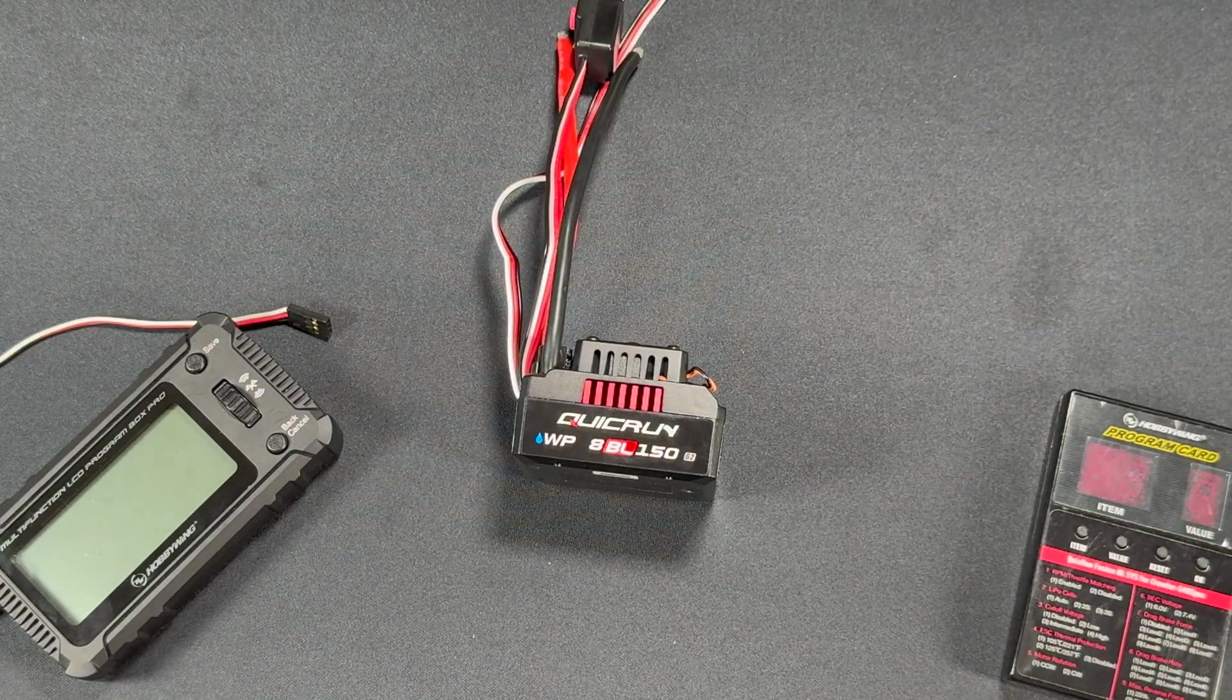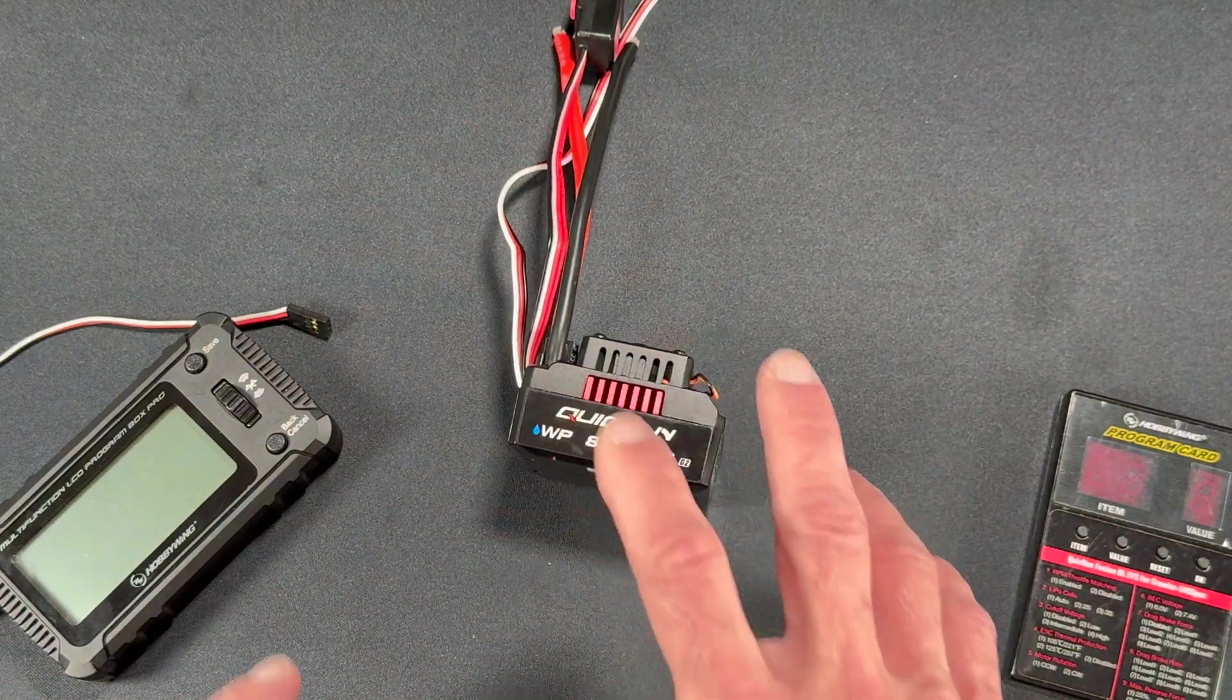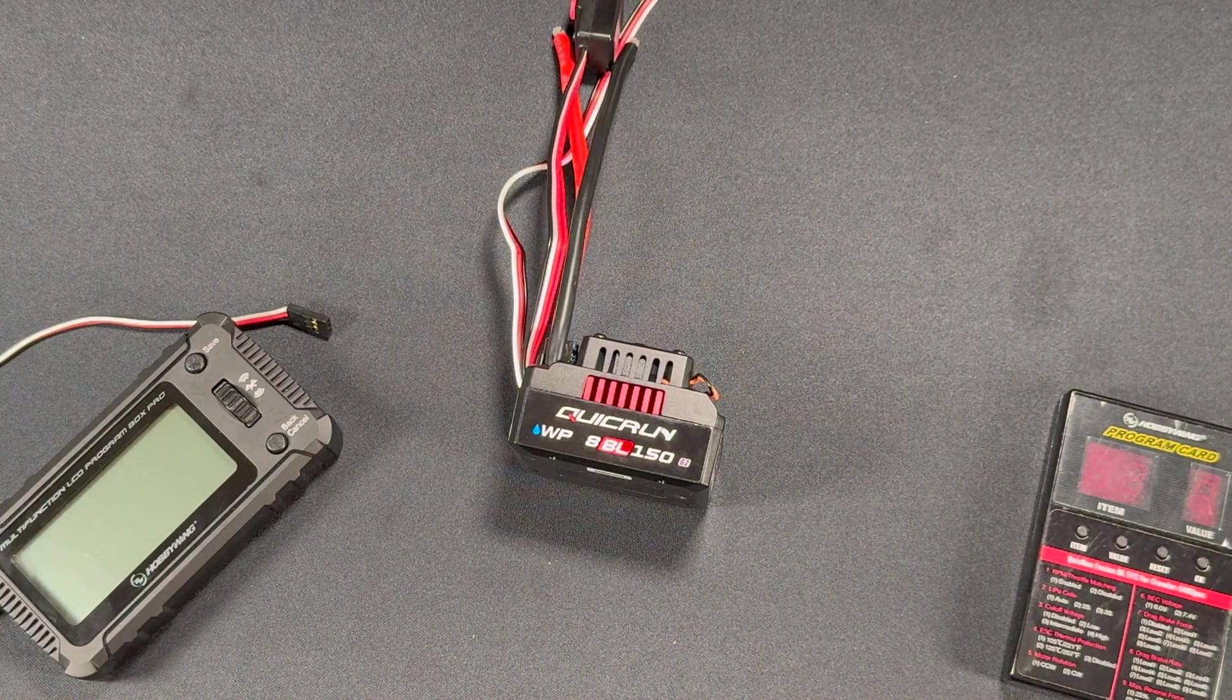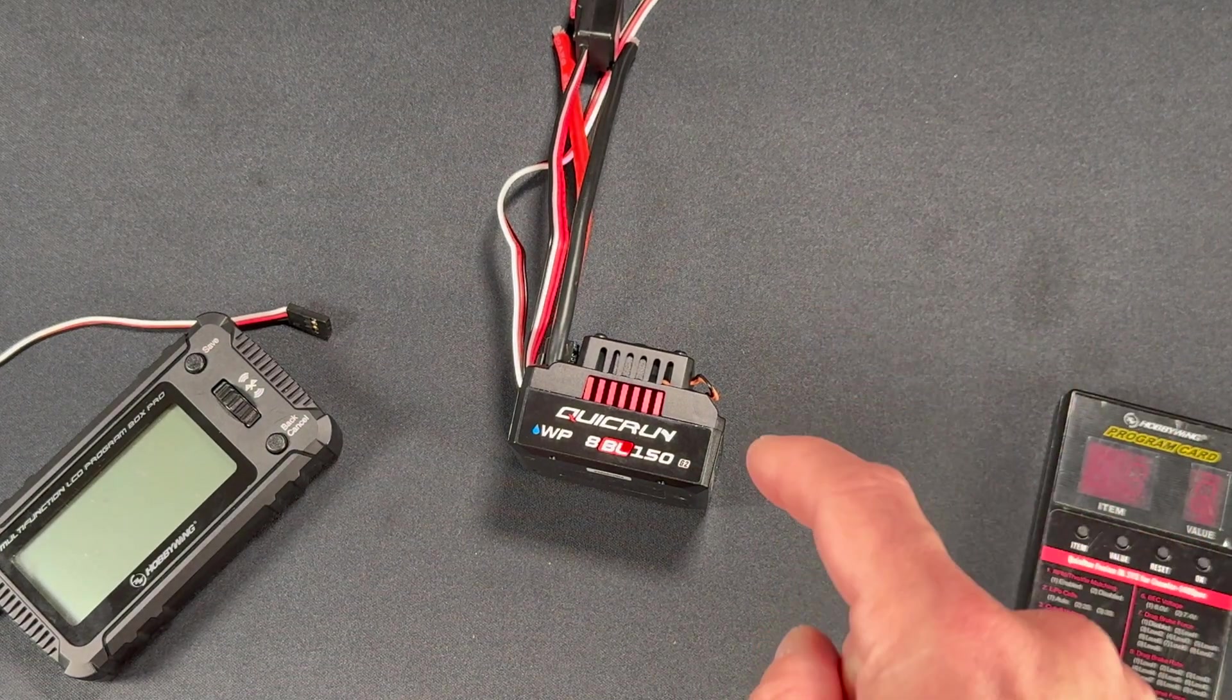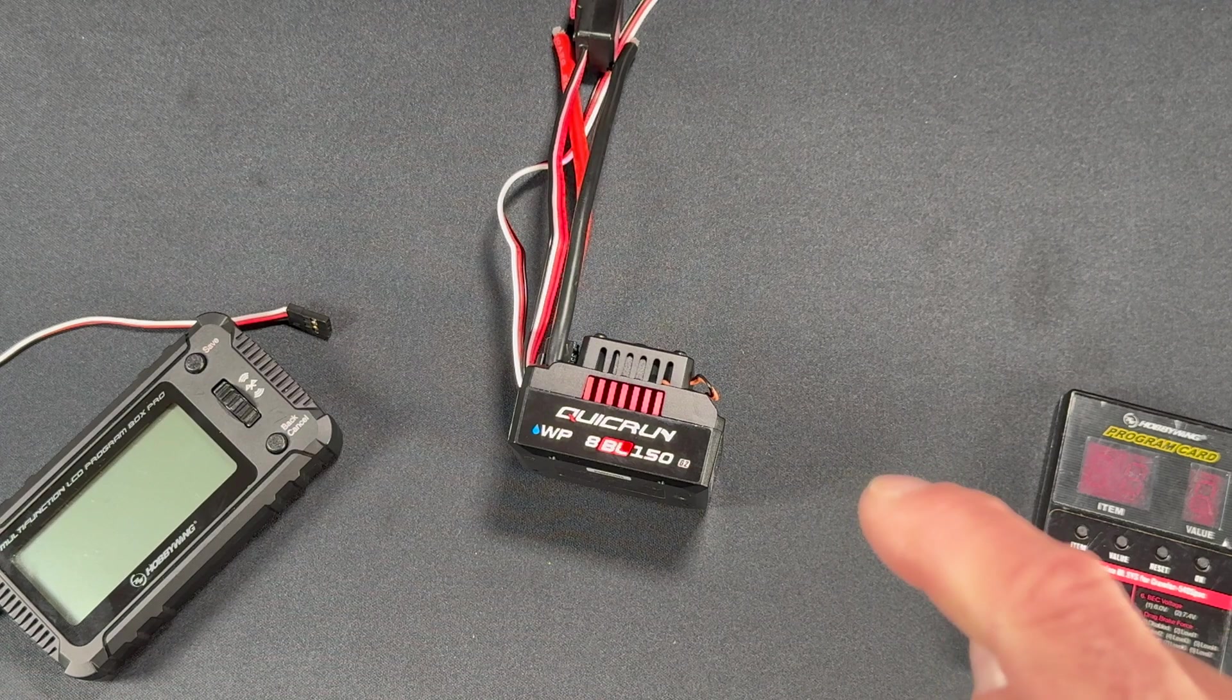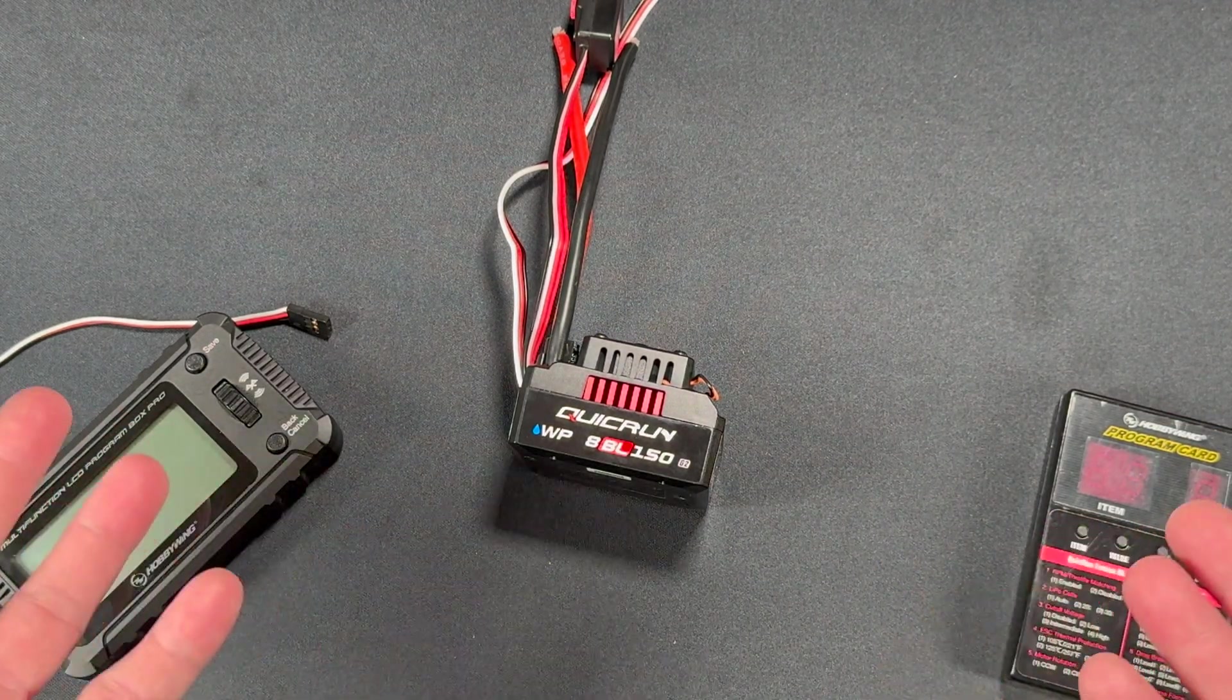So now, as we mentioned, there will be a link in the description down below for the hard information on the speed control itself as well as the combos and anything else I may have overlooked here or you might have questions about. So check those links out. Hobbywing also does a podcast. It's called RC Stuff, powered by Hobbywing. We give away a free Hobbywing combo each and every episode. All you have to do to find out how to enter to win is listen to an episode.